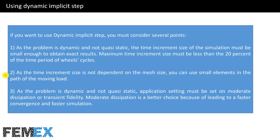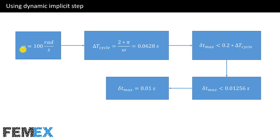We can conclude that the dynamic implicit step does not have the disadvantage of the dynamic explicit step. As the problem is dynamic and not quasi-static, the application setting must be set to moderate dissipation or transient fidelity. Moderate dissipation is a better choice because it leads to faster convergence and a faster simulation. For example, if the angular velocity of the wheel is 100 radians per second, the time period of each cycle of the wheel gives a maximum time increment size that must be less than 20 percent of that period — so the maximum time increment size can be set to 0.01 seconds.